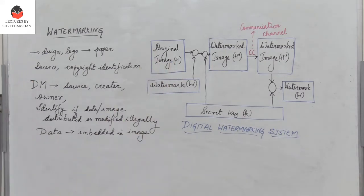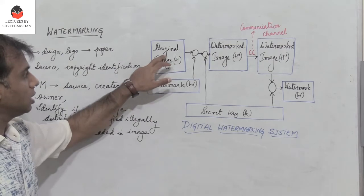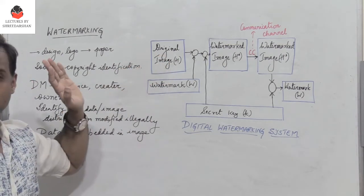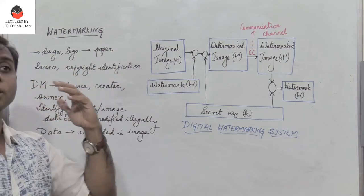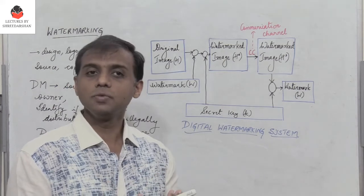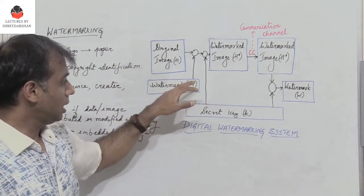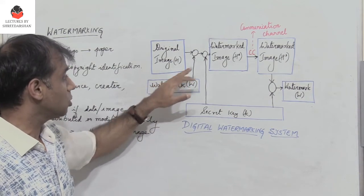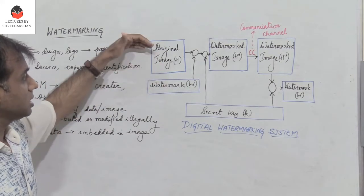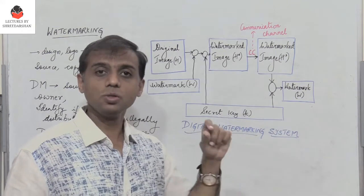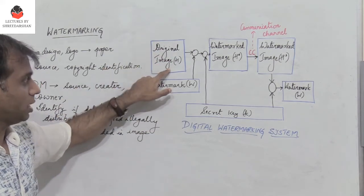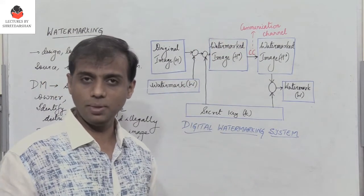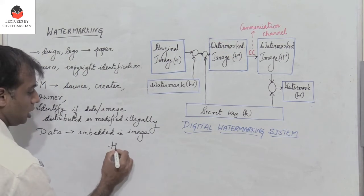Looking at the block diagram: we have the original image H, and then there is a watermark — a unique data which is embedded inside the original image in an imperceptible way. A secret key is used to embed the watermark information inside the original image, producing the watermark image.